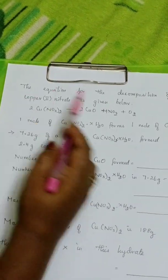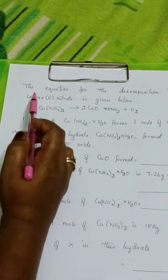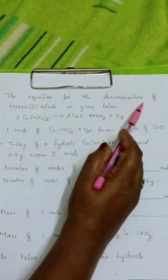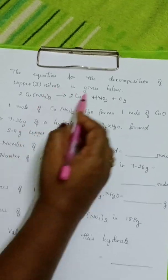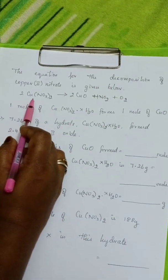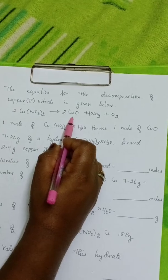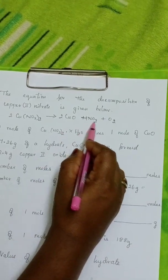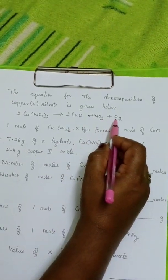See the information given here, data given in the question. The equation for the decomposition of copper nitrate is given below. 2 moles of copper nitrate gives 2 moles of copper oxide and 4 moles of nitrogen dioxide plus oxygen.